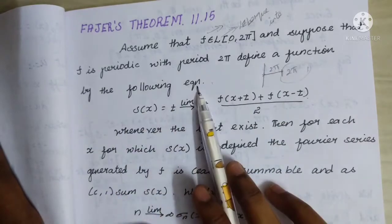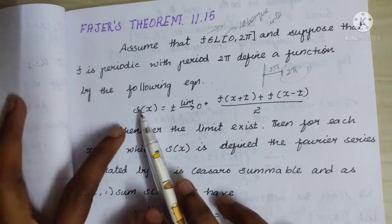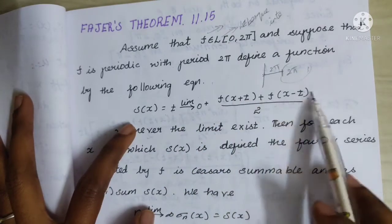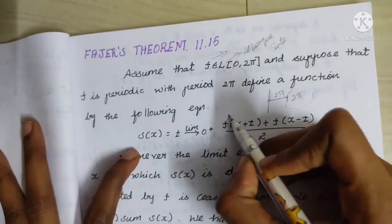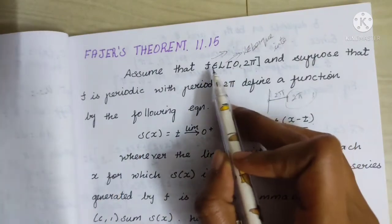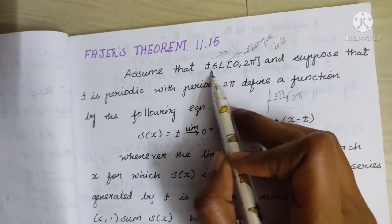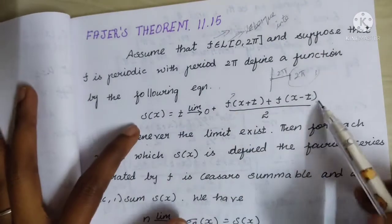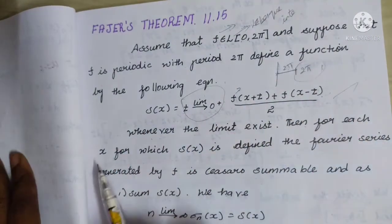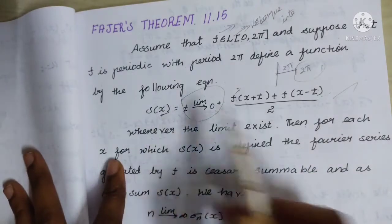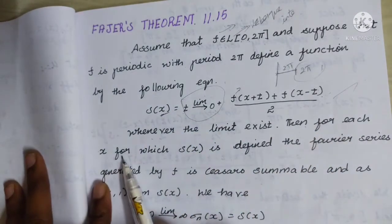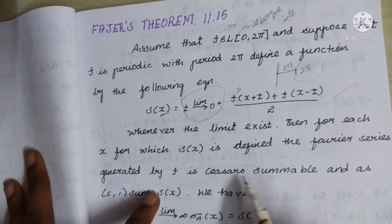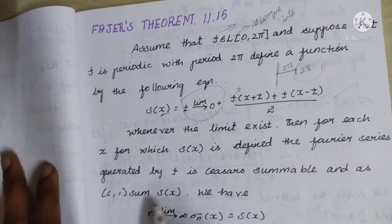Define a function by the following equation: s(x) = lim(t→0⁺) [f(x+t) + f(x−t)] / 2, whenever the limit exists. Then for each x for which s(x) is defined, the Fourier series generated by f is Cesàro summable with C,1 sum s(x).